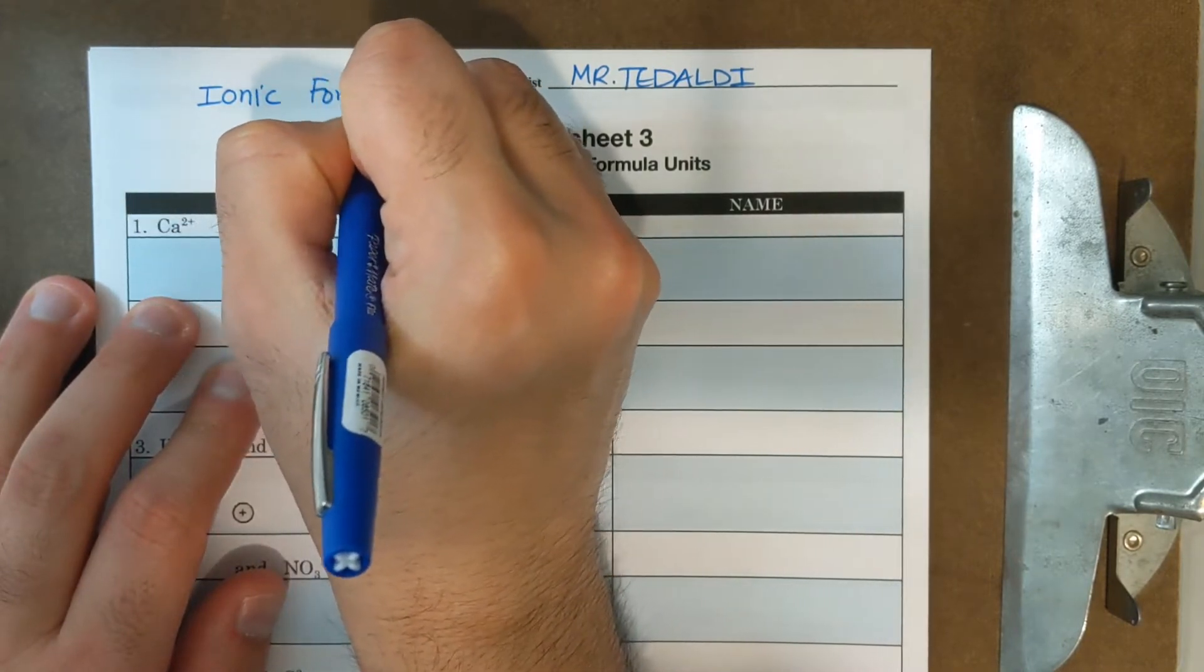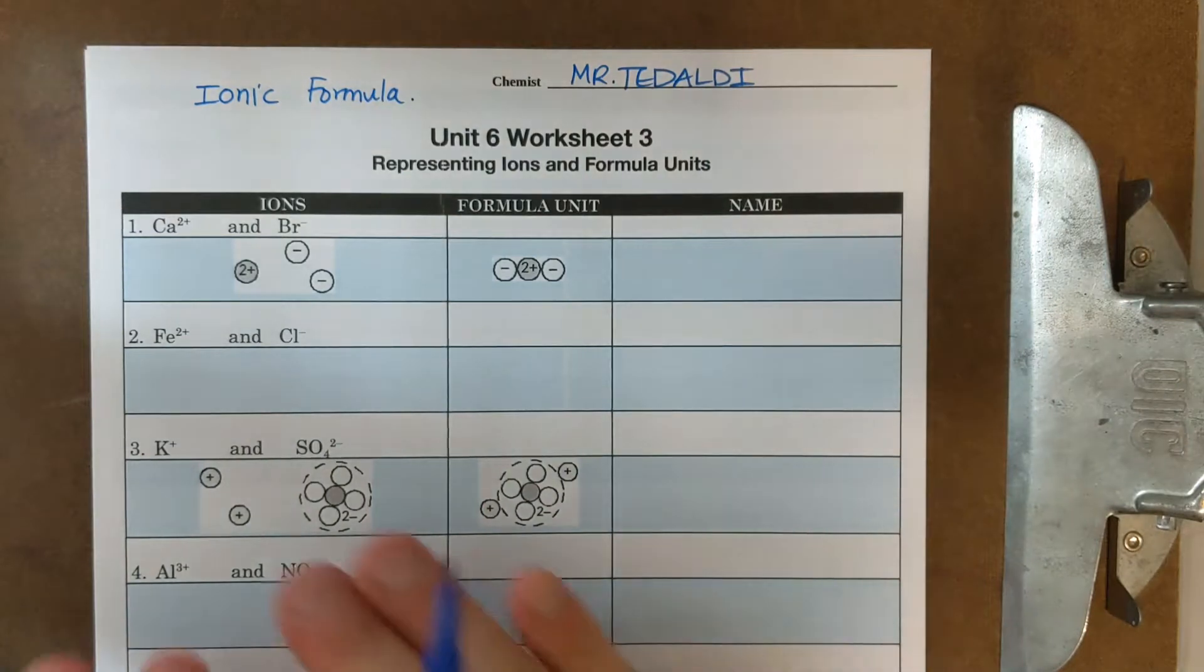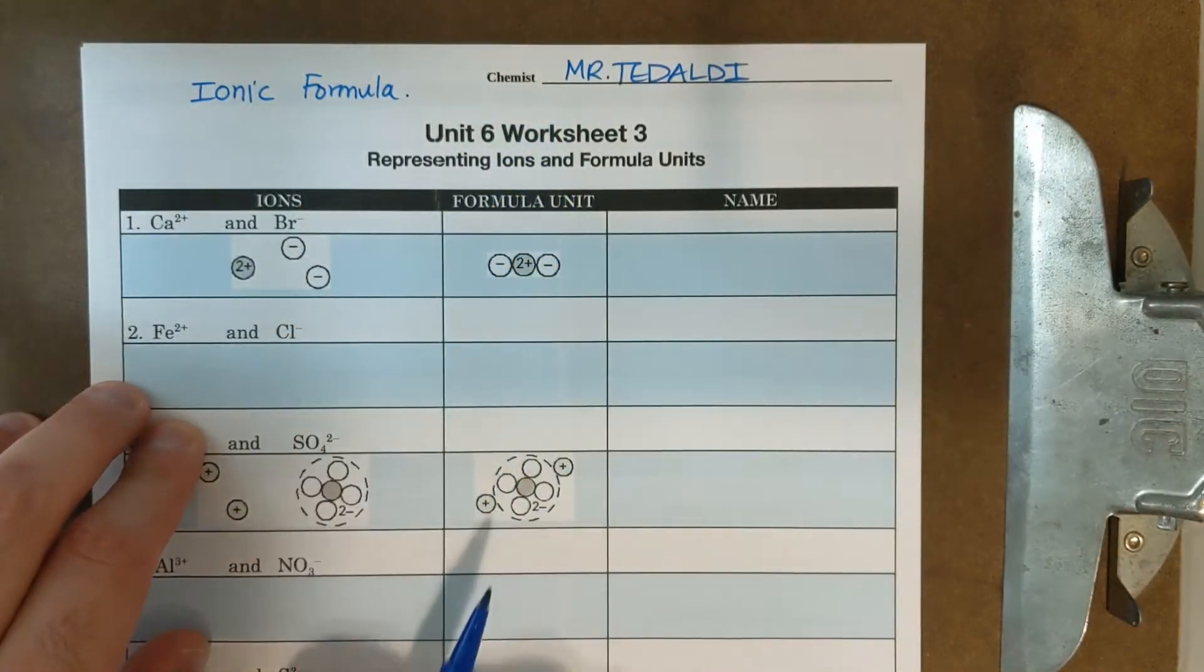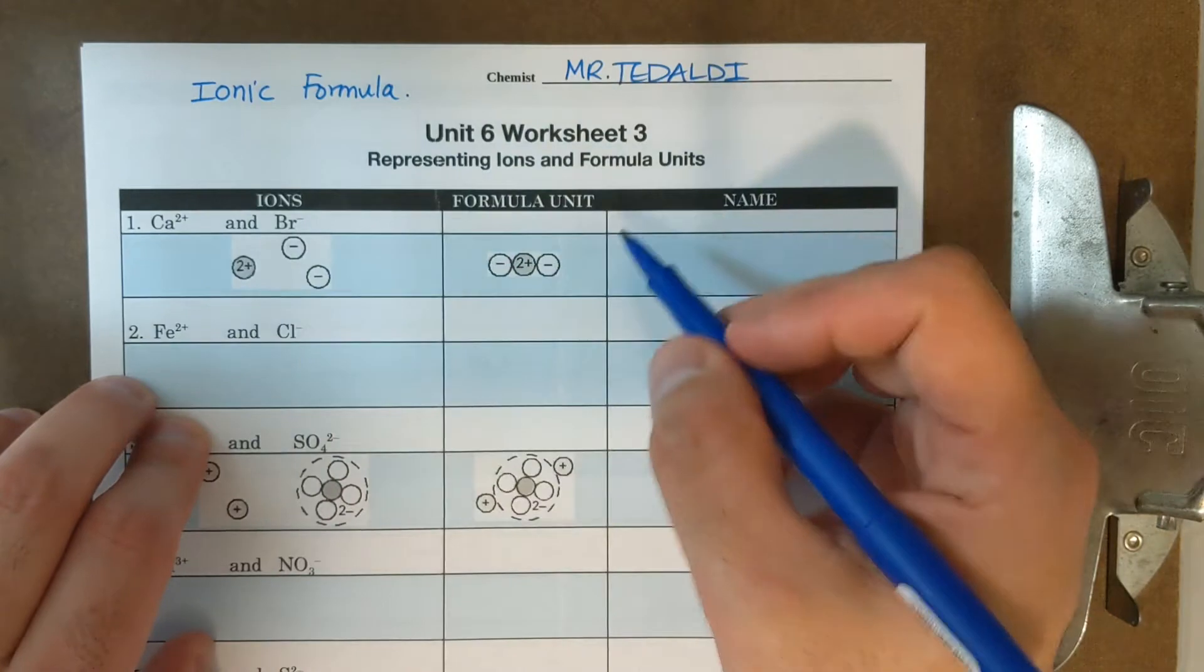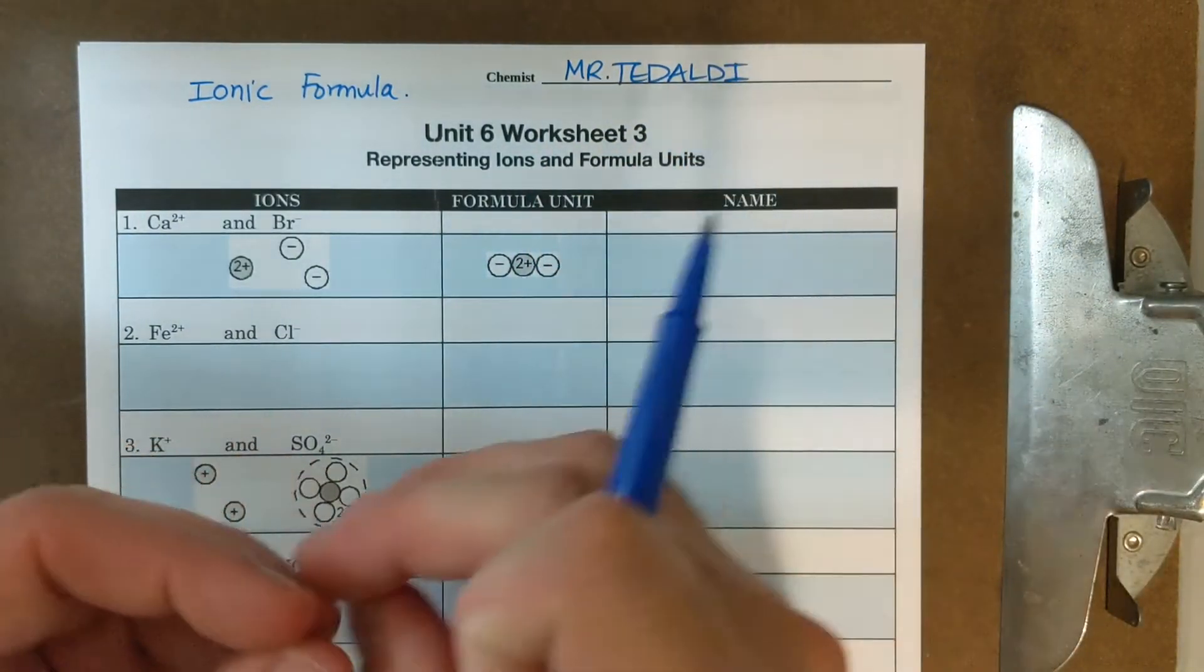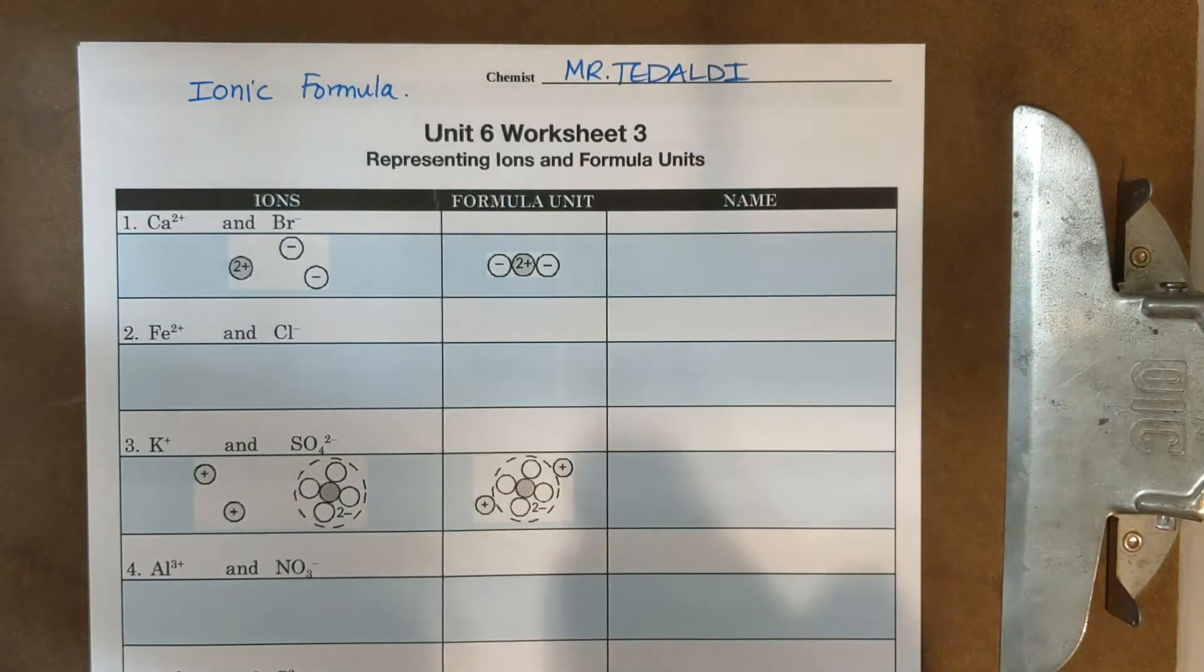So either you're going to have simple ionic compound, transition metal ionic compounds, or polyatomic ion. And the first three are actually one of each example. So in the first column, you're going to draw the ions and how many of each you're going to eventually need. In the second column, you're going to draw out a connecting of that structure, or you could write out the formula. And in the third column, you're going to put the name.